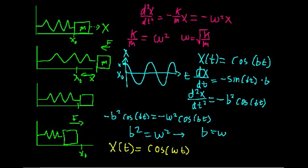We found a solution. The frequency is omega, which is what we used as a substitution earlier. This actually does have physical significance — it's the frequency with which the spring oscillates, and that frequency is radical k over m. So everything did indeed work out in the end.